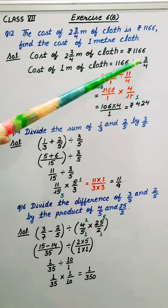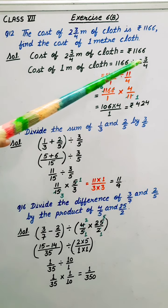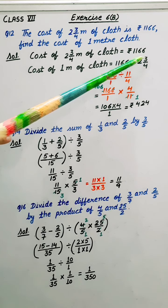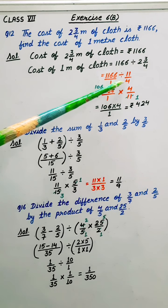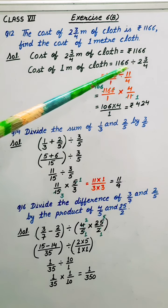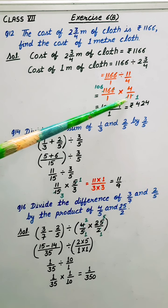Change it in improper form. So 4 times 2 is 8 plus 3 is 11 by 4. Now divide changes into multiply and for that we have to write the reciprocal of this number. So this becomes 4 upon 11.